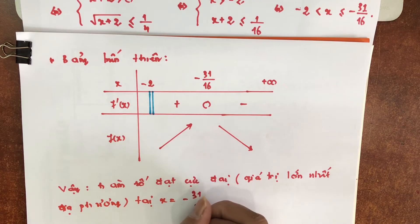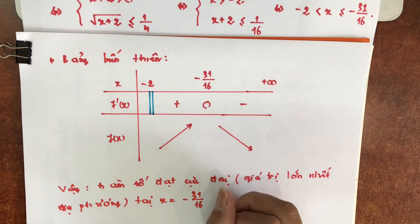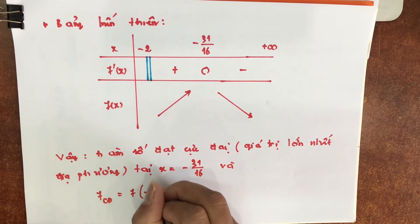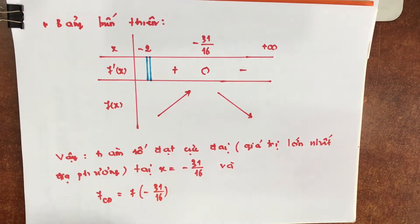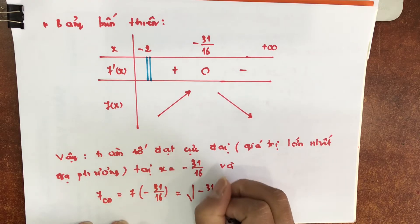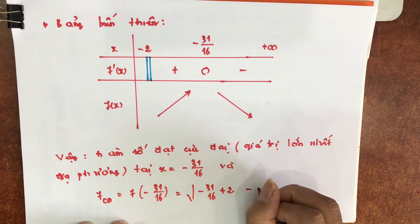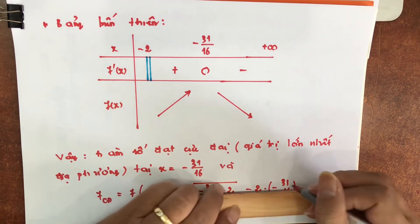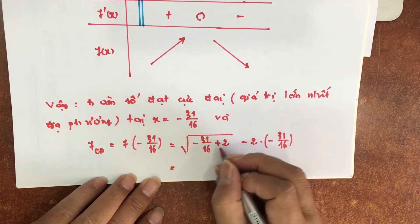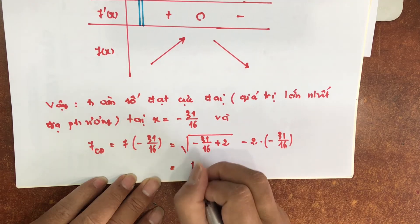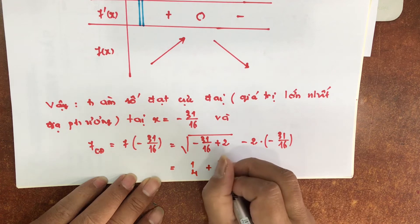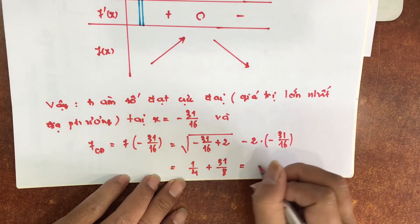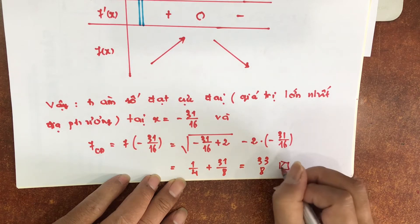Giá trị lớn nhất địa phương tại x bằng trừ 31 chia 16. Và F cực đại bằng F tại trừ 31 chia 16. Thế vào: căn bậc 2 của (x+2) tức là trừ 31 chia 16 cộng 2, rồi trừ 2 nhân với trừ 31 chia 16. Vậy là 32 trừ 31 là 1 x 16, căn bậc 2 của 1/16 là 1 phần 4. Trừ đi trừ là cộng 31/16, nhân 2 là 31/8. 1 phần 4 là 2 phần 8 cộng với 2 cộng với 31 là 33 phần 8. Đó là giá trị cực đại.